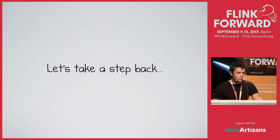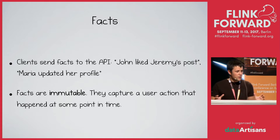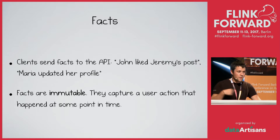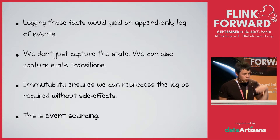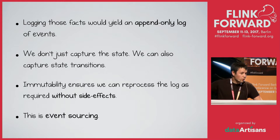We can take a step back and rethink the problem. Clients send facts to the API — that someone liked someone's post, someone updated their profile — and those things are immutable. They capture user actions that happened at some point in time and never change. They're a rich way to capture information: joining and unjoining a tribe is actually a negative signal, but if we just write and then delete, we lose that information forever. We could start by logging all of those events — an append-only log of updates, every state transition that has ever happened to the system. Immutability ensures we can reprocess that log continuously without side effects, allowing us to retroactively apply new computations. This is the essence of event sourcing.